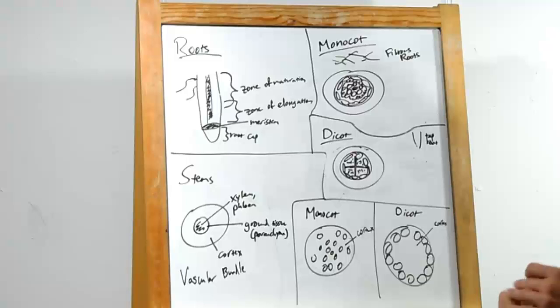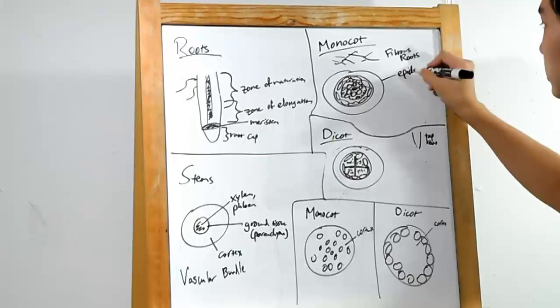Okay, on the outside, you have something called the epidermis, the outer skin. This provides most of the protection from the stuff on the outside.